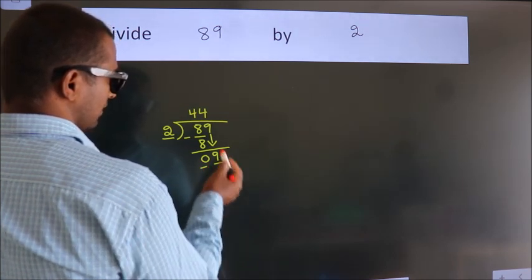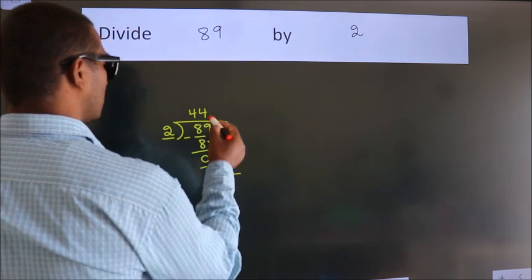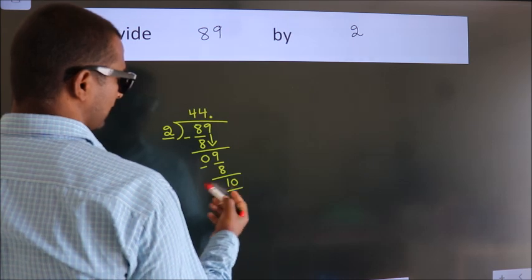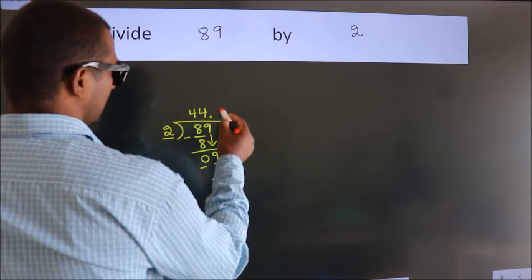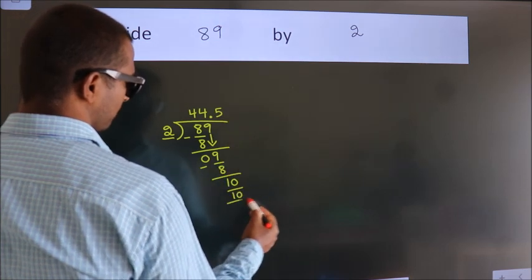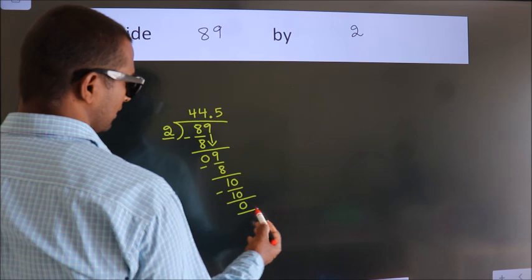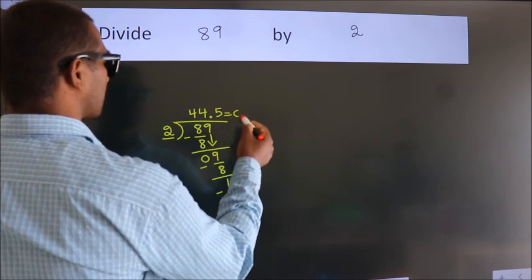After this, there are no more numbers to bring down. So what we do is put a dot and take 0. So we have 10. When do we get 10 in the 2 table? 2 times 5 is 10. Now we subtract and get 0. We got remainder 0, so this is our quotient.